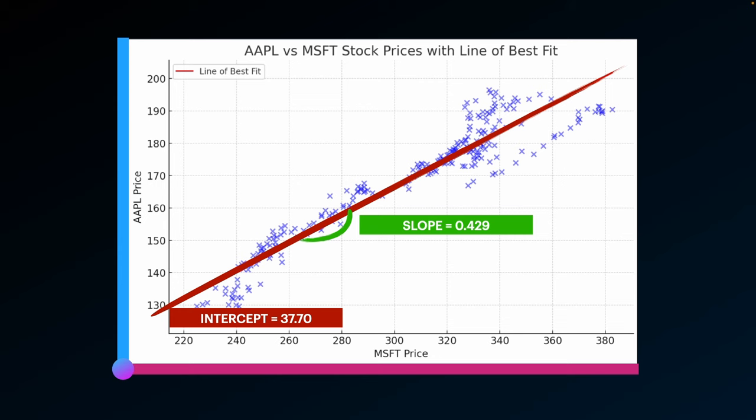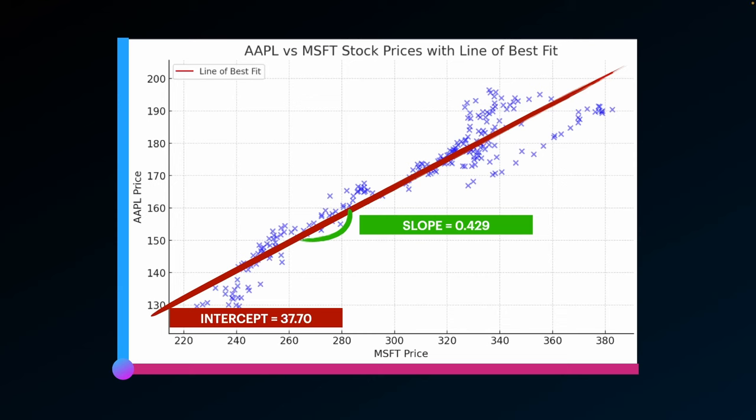In our case, we're going to use the slope as our hedge ratio. What is the slope? The slope is saying: for every unit price movement in Microsoft, you would expect a 0.429 movement in Apple. And the intercept is saying: assume Microsoft's price goes to zero, then Apple's price would be $37.70. I'm going to use the intercept here — just so you can see why in a moment.